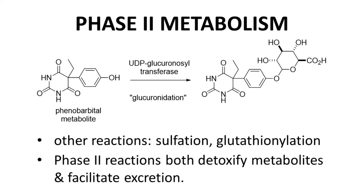Other Phase II reactions include sulfations — the addition of a sulfate — and glutathionylation — the addition of glutathione. Each of these reactions makes a metabolite that is very polar. As was mentioned before, Phase II reactions often follow Phase I reactions. Oxidative metabolism in Phase I can generate reactive, toxic metabolites in the liver. Phase II reactions often minimize the reactivity of these metabolites, protect the liver from damage, and help remove products of drug metabolism from the body.